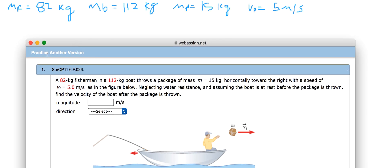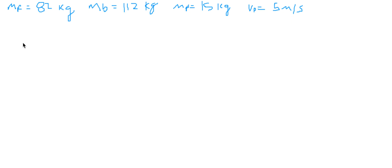We have the mass of the fisherman, which is 82 kilograms, the mass of the boat, which is 112 kilograms, the mass of the package, 15 kilograms, and the velocity of the package being thrown. Notice that it says the boat is at rest before the package is thrown, which means the initial velocity of the boat is going to be zero.